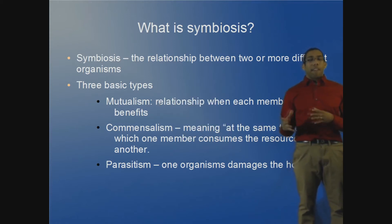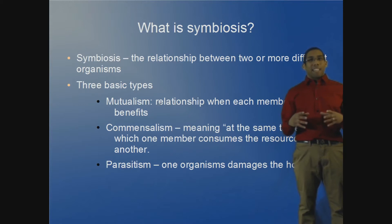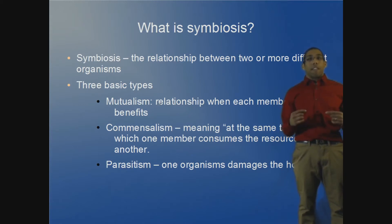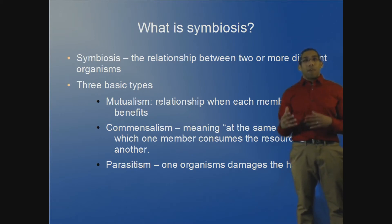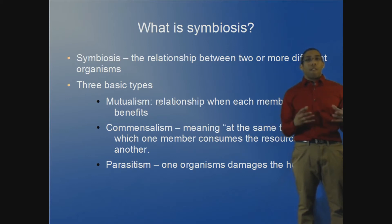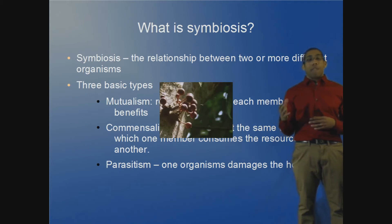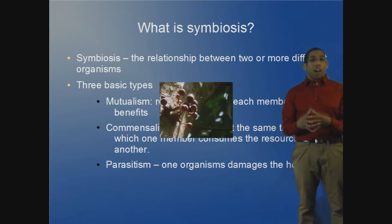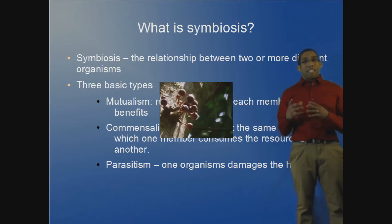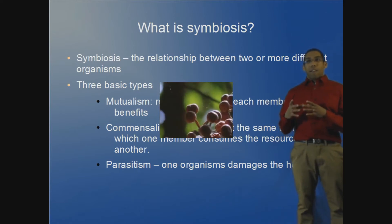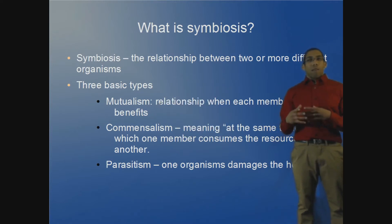That's a very good example, but even more defined is obligate mutualism, where both parties will not develop without the presence of the other. For instance, you have the fig tree and the fig wasp. The fig tree needs the fig wasp to pollinate, and the fig wasp needs the seeds for reproduction to occur.